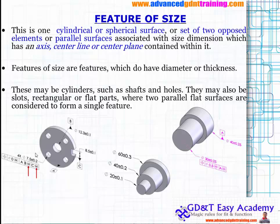This is one cylindrical or spherical surface, or a set of two opposed elements. You have to first understand the Feature of Size (FOS) — two opposed elements. If you see this particular side and the back of it, there is an opposed element where you can measure directly the thickness. But this particular slot is not a FOS. Internal holes, thickness between two opposed parallel surfaces — all of these you can measure. Feature of size are features which do have a diameter or thickness. They may be cylinders such as shafts and holes.